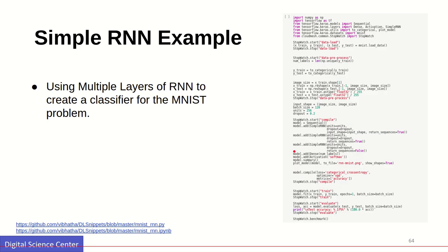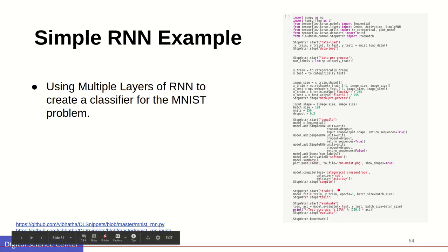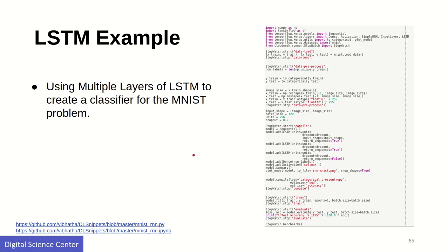The rest of the code is the same as used with CNN, MLP, and other layers. You train it and get the evaluation. The code is available in the links below as a Python script or IPython notebook. For solving the same problem with LSTM, you add the same three layers.